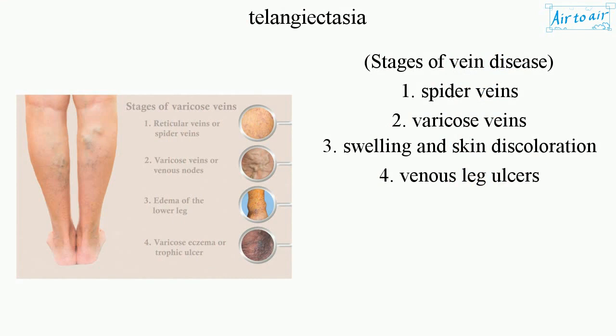Stages of vein disease: Stage 1 — Spider veins; Stage 2 — Varicose veins; Stage 3 — Swelling and skin discoloration; Stage 4 — Venous leg ulcers.